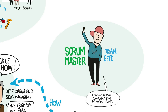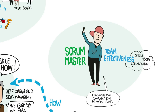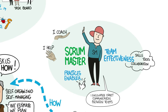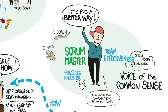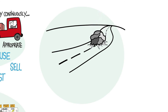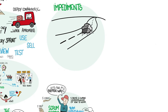The Scrum Master is accountable for the Scrum team's effectiveness. He does this by enabling the Scrum team to improve its practices and collaboration — he doesn't tell people what to do, but rather coaches them to recognize, understand, and address issues as they arise. A high-performance team is continuously improving, so the Scrum Master is continuously helping the team and the organization to find better ways of doing what they do. Of all the metaphors for the Scrum Master, I find 'voice of the common sense' to be the most compelling — the Scrum Master helps the developers, the product owner, and the organization to create a common understanding of how to work together effectively.